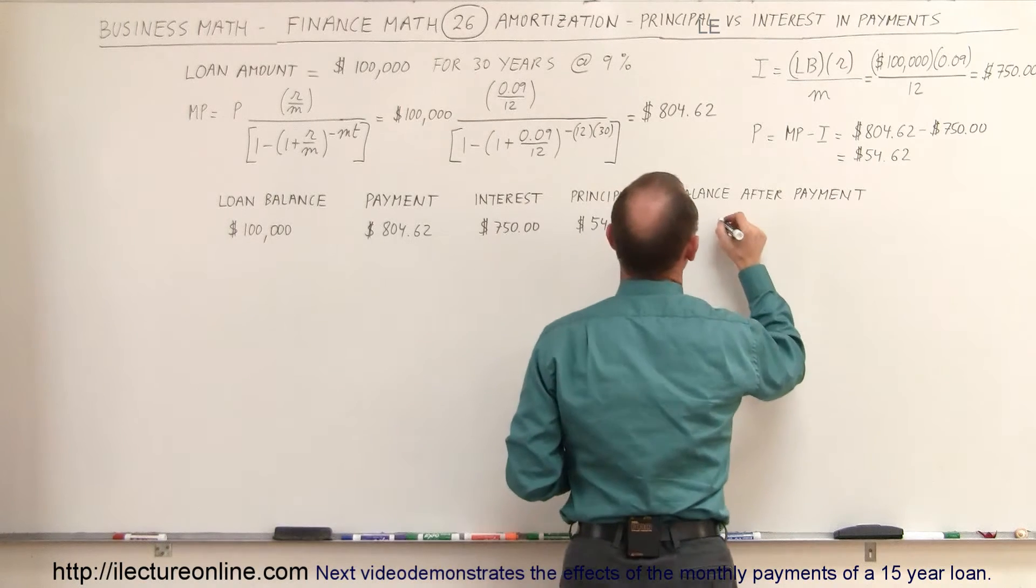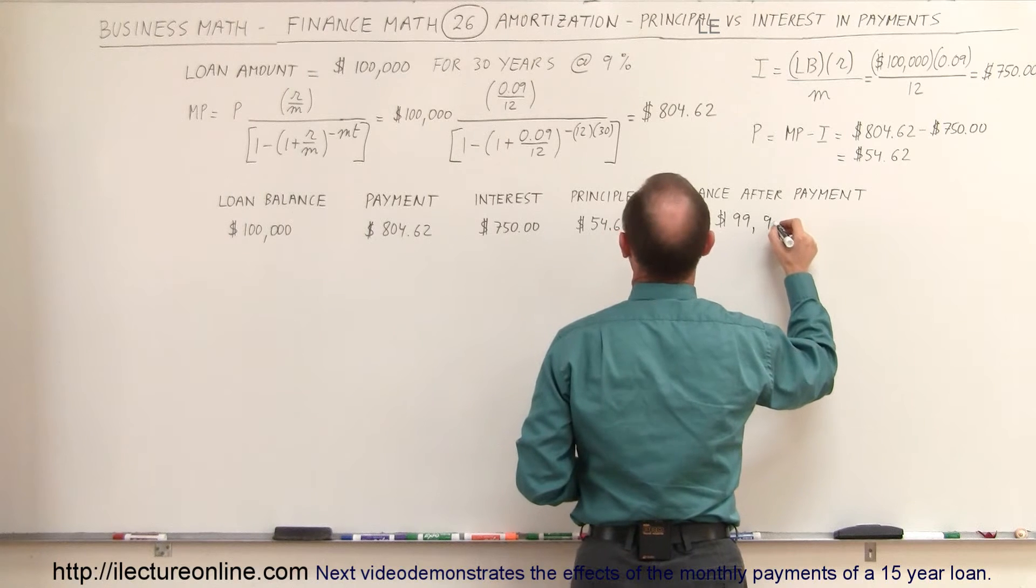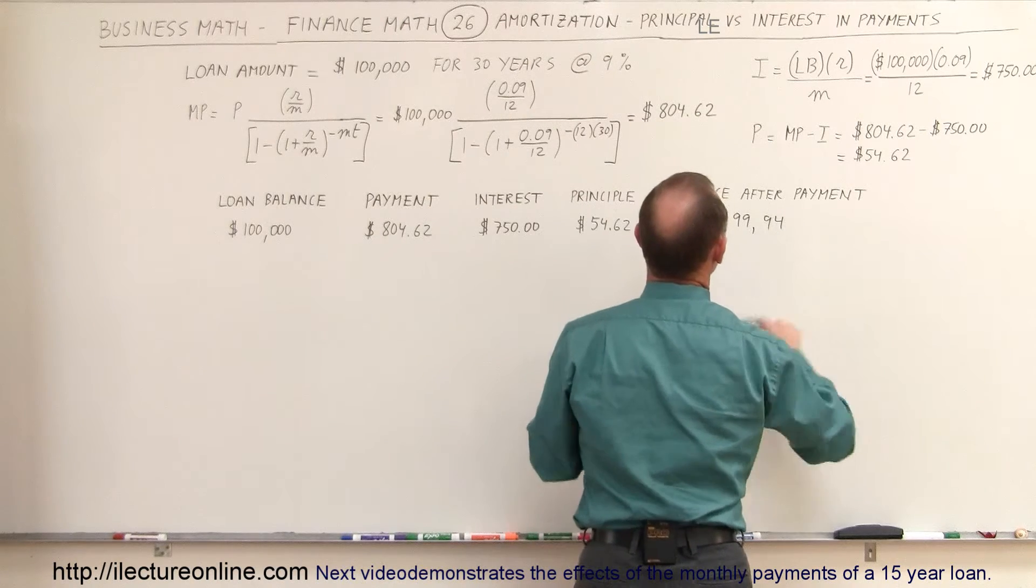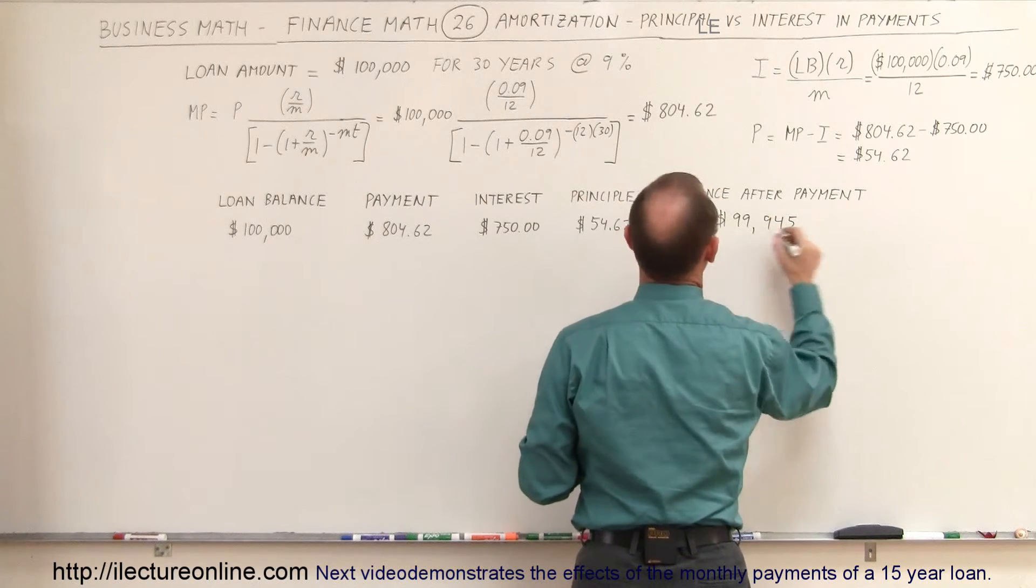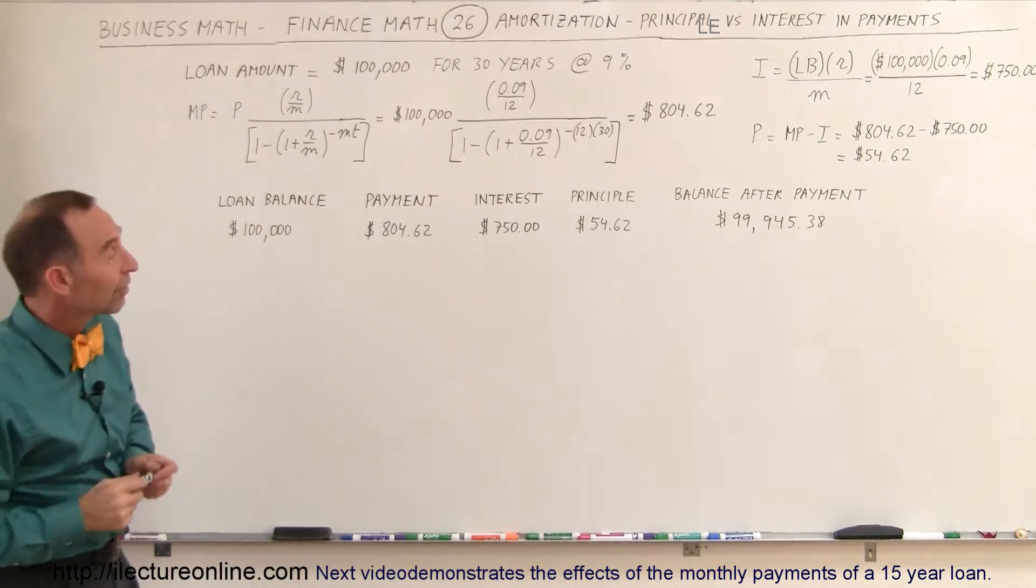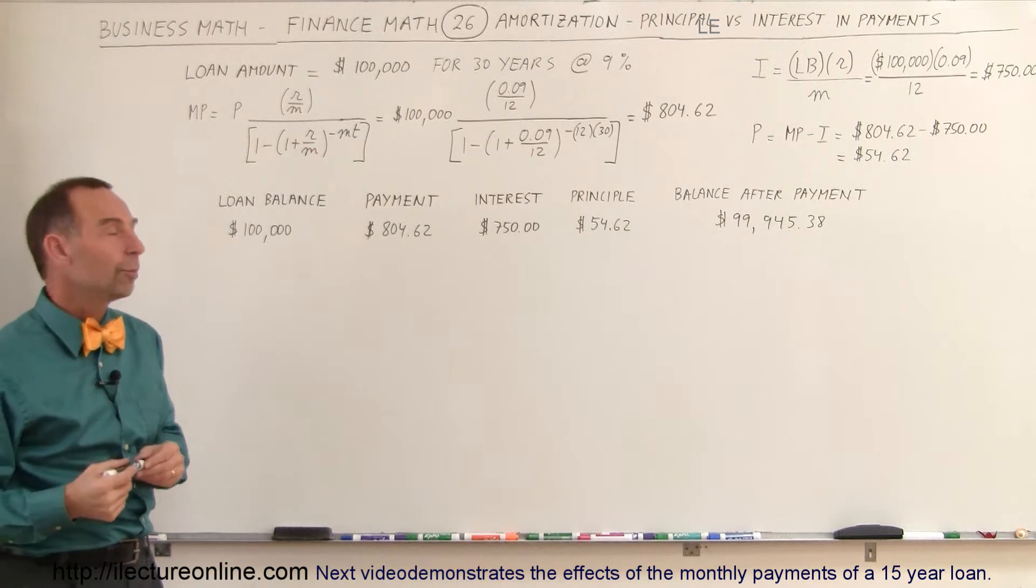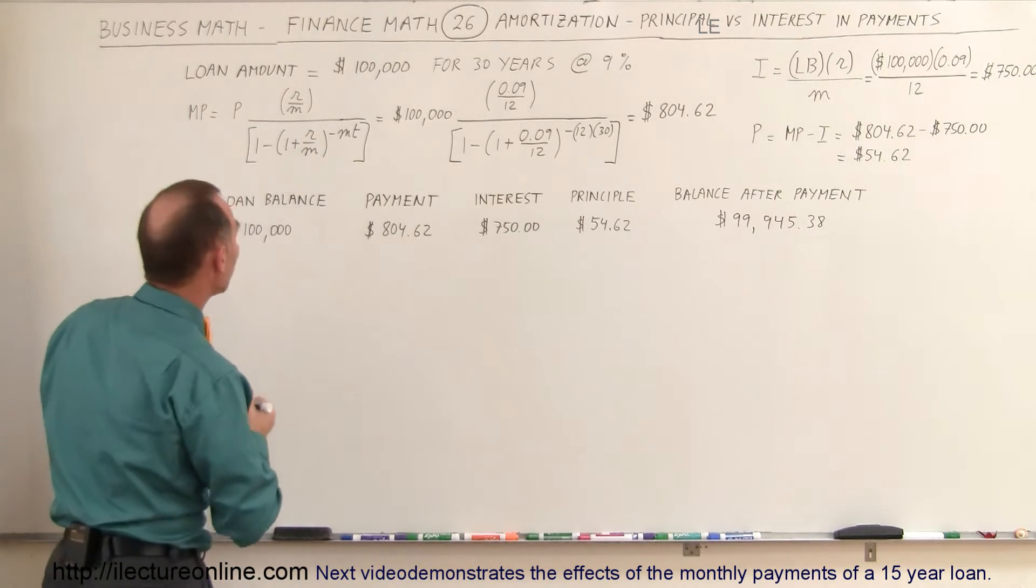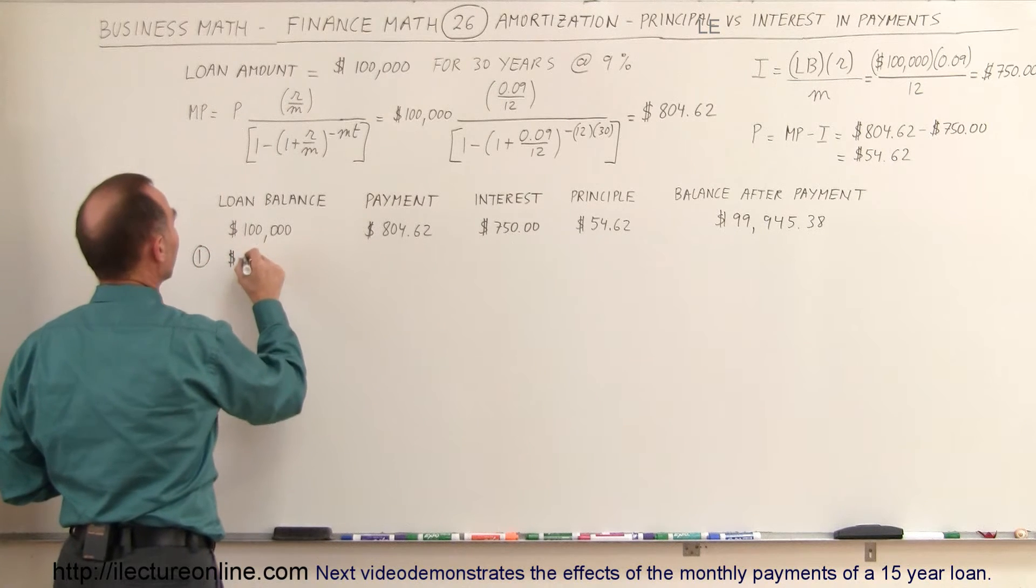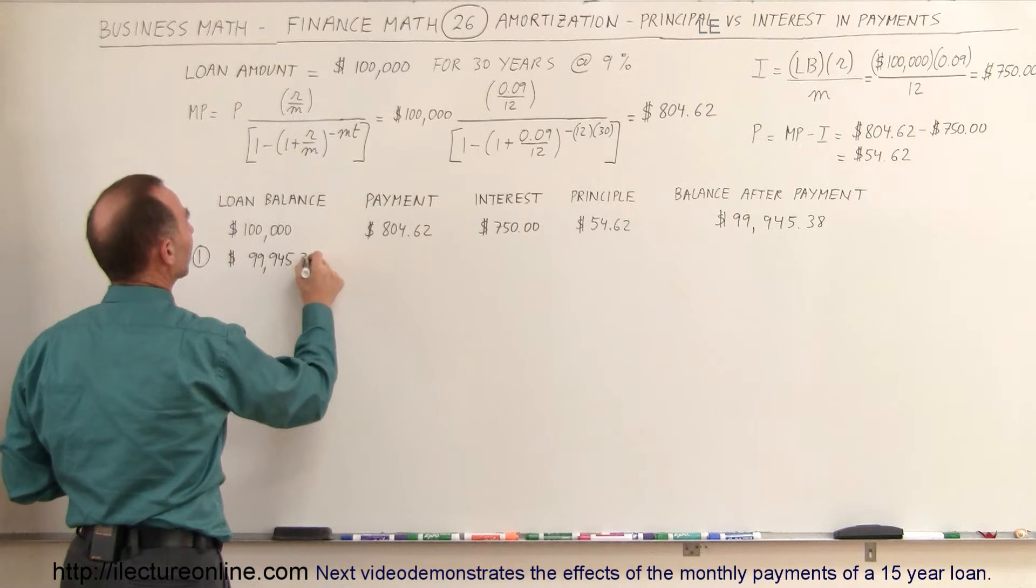So the balance will be the loan balance minus the principal, so that will be $99,945.38. So you can see, after you made a nice, hefty payment of $804, only $54 of it will go to paying off the loan, and $750 of it will go to paying off the interest. So that now is your loan balance the next month. After one month, your loan balance now is $99,945.38.